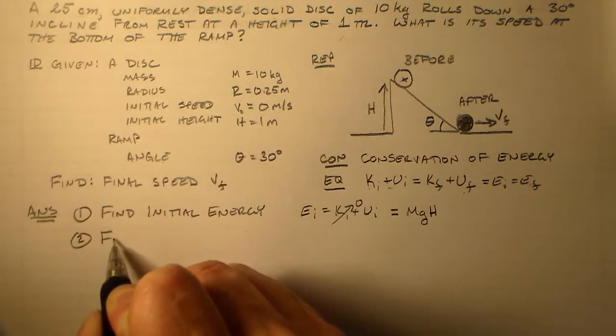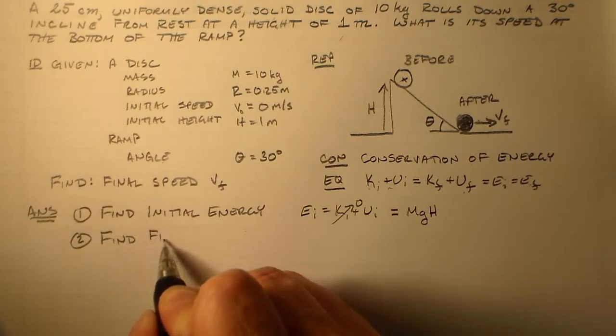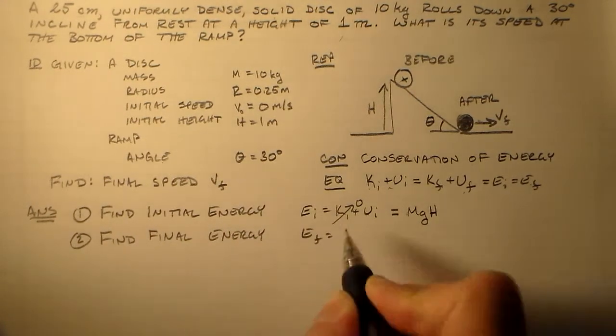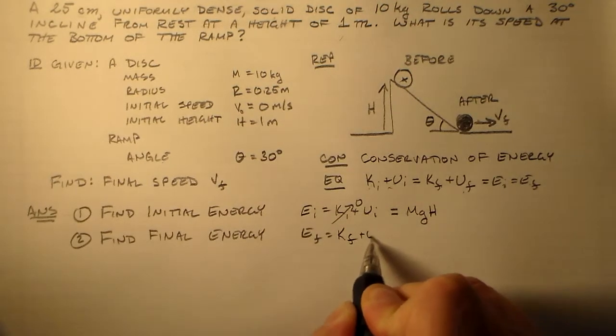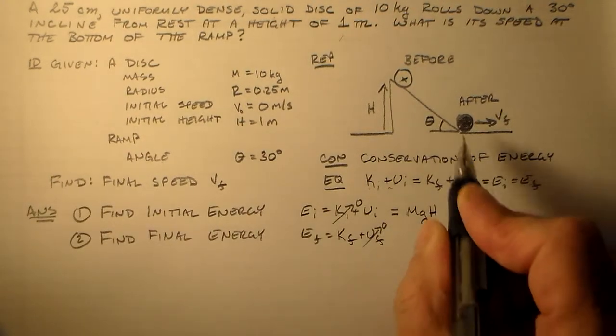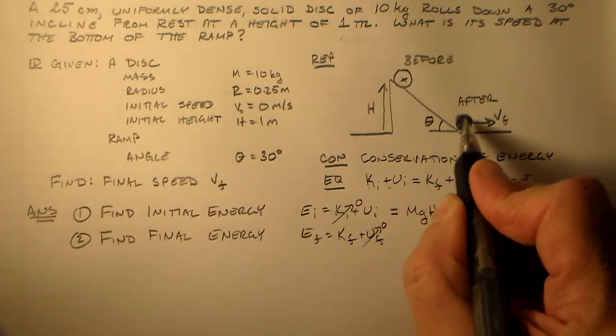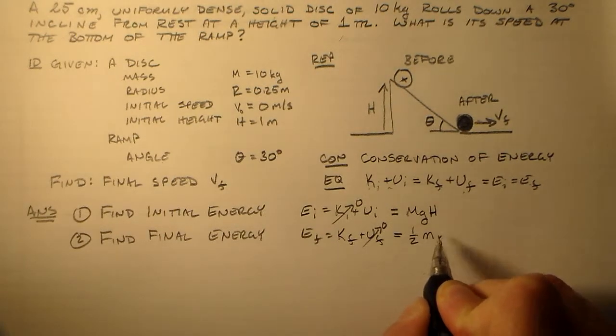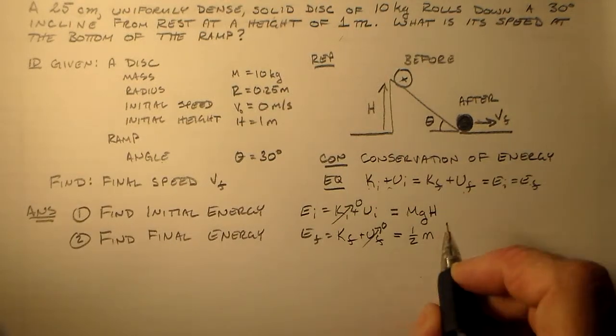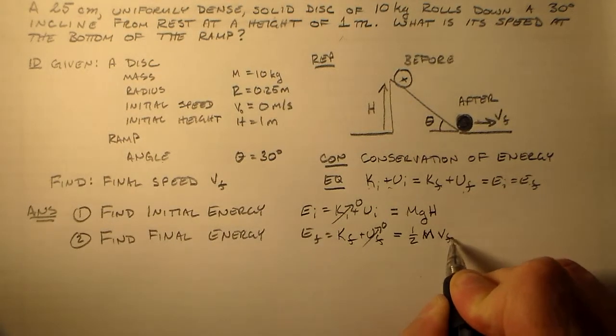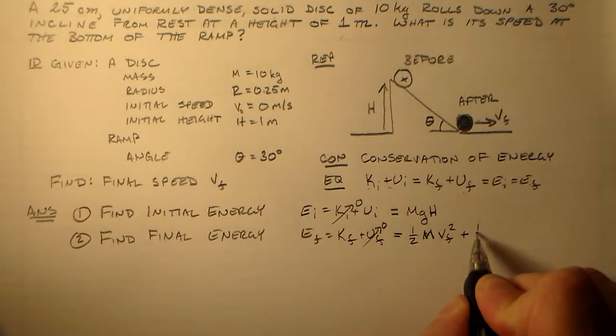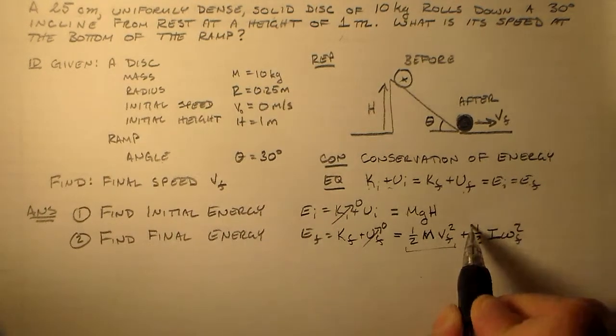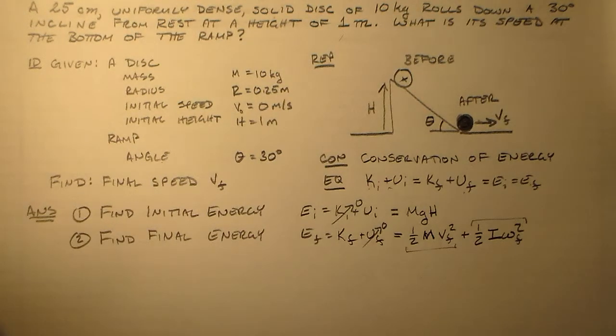Next I'll find the final energy. EF, which is equal to KF plus UF. But now at the bottom here, there's no potential energy. So we'll call that one half MV final squared plus one half I omega final squared. So this is the translational and this is the rotational part. So we've got two parts here that we have to worry about.